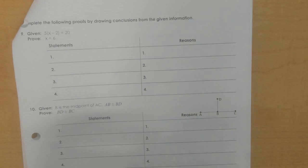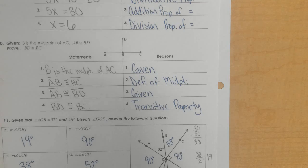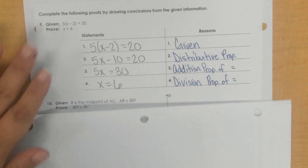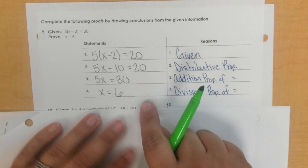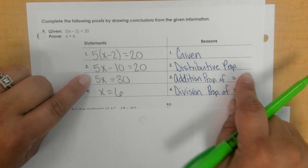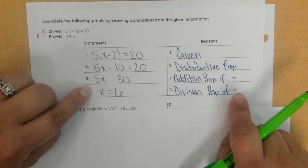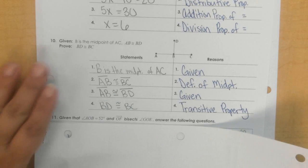Okay, for example nine, that one's pretty simple. I'm just gonna put these up here. I started out with my statement because it was given, and then I worked it out using distributed property, and then I added 10, and then I divided and got six.